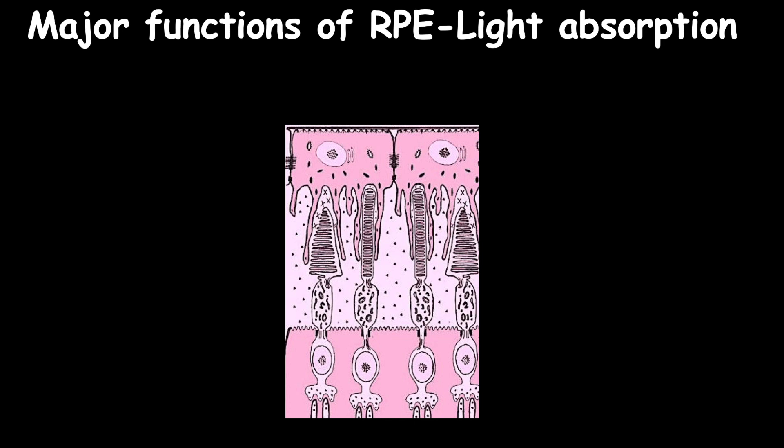RPE is a very important layer which serves an important role in keeping visual function. Thus, a disorder in the RPE layer may lead to the death of photoreceptors.